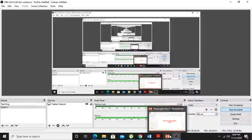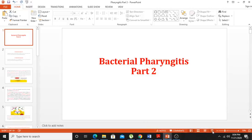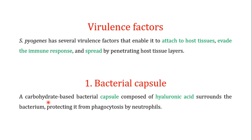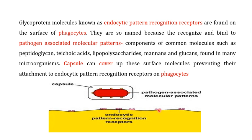Welcome back to this next video. In this video we are going to talk about some of the important virulence factors of Streptococcus pyogenes, which is responsible for causing bacterial pharyngitis. In the last video I told you that S. pyogenes has several virulence factors that enable it to attach to host tissue, evade the immune response, and spread by penetrating host tissue. I also told you about the bacterial capsule — a carbohydrate-based capsule composed of hyaluronic acid surrounding the bacterium, protecting it from phagocytosis by neutrophils.